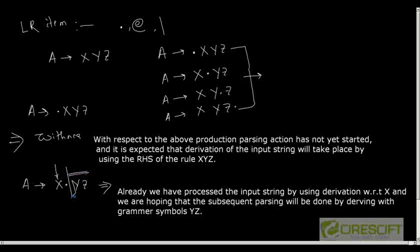The parser is in a state where it has already done derivation with respect to x, and it is hoping that the subsequent input strings will be derived from y and z. Now suppose I have A → xyz•. What does this mean? That means the entire input string has been processed by using the derivation from xyz and it is going to accept the input string because it has nothing more to parse.